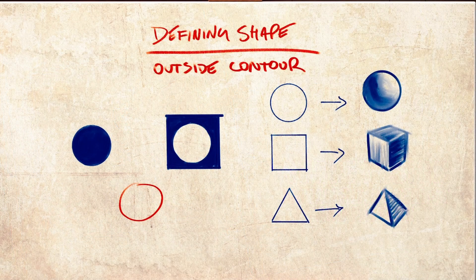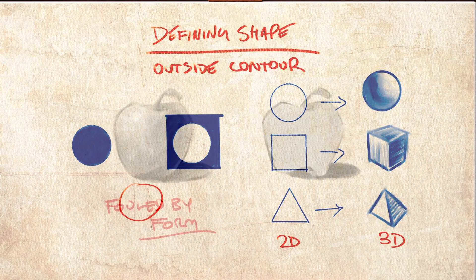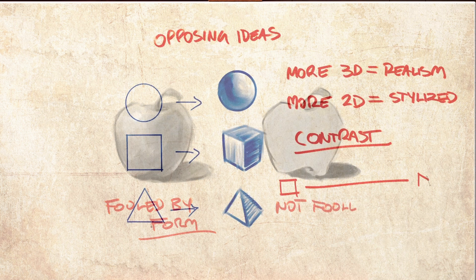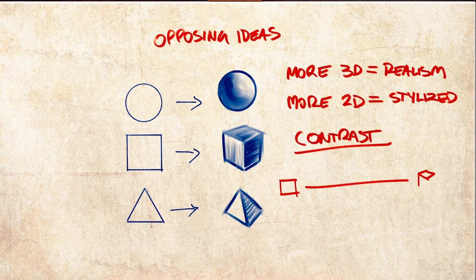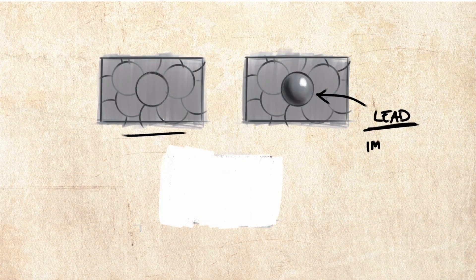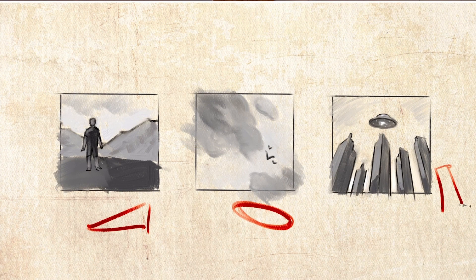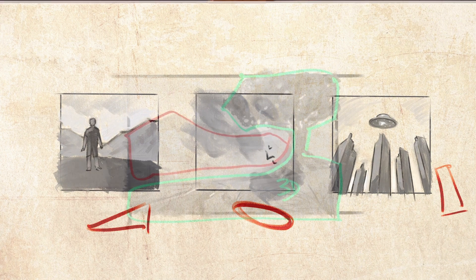In this art composition lesson we're going to take a look at shape design and how to use it as a design component. Shape is a lot more than just circles, squares and triangles. It's a valuable tool that can help elevate our compositions to a much higher level by creating greater interest, structural stability and even meaning.